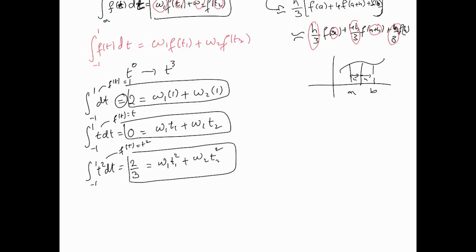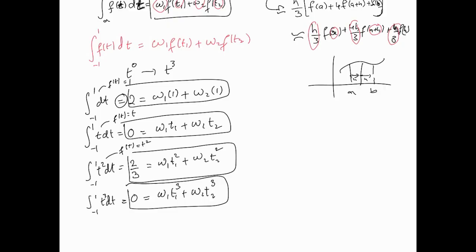For f(t) = t³: the integral from -1 to 1 of t³ dt = 0, since it's an odd function. So equation four is: w1·t1³ + w2·t2³ = 0. Now I have four equations and four unknowns — w1, w2, t1, t2 — which gives us the flexibility to set up the quadrature ourselves. This is Gaussian quadrature.